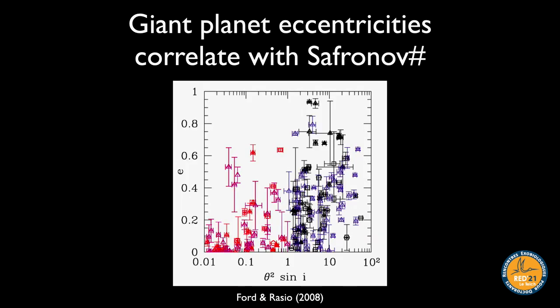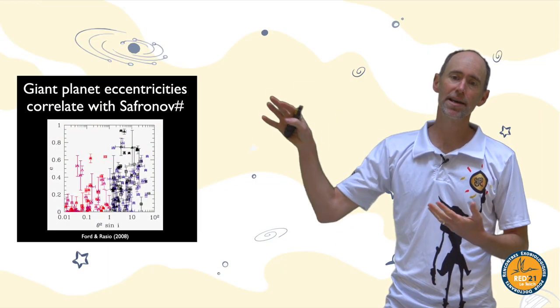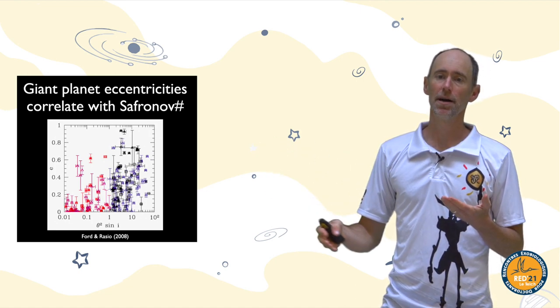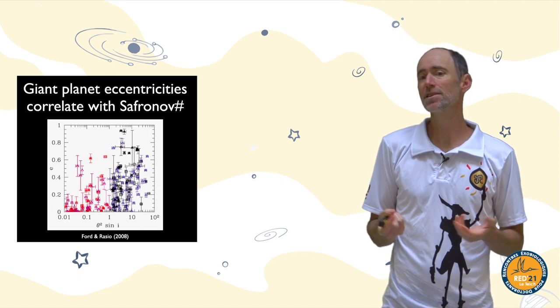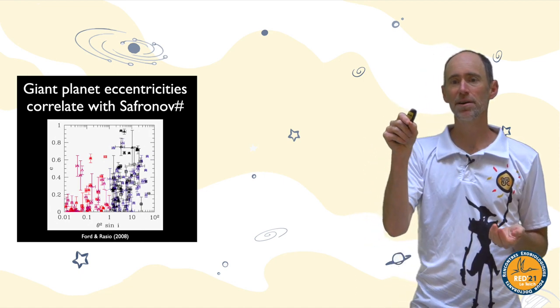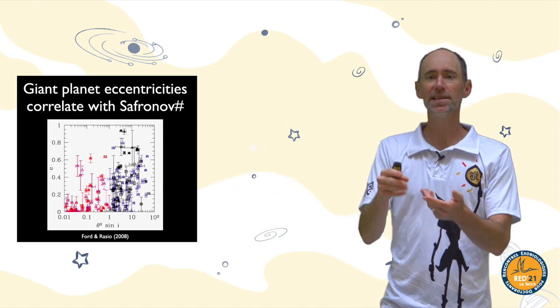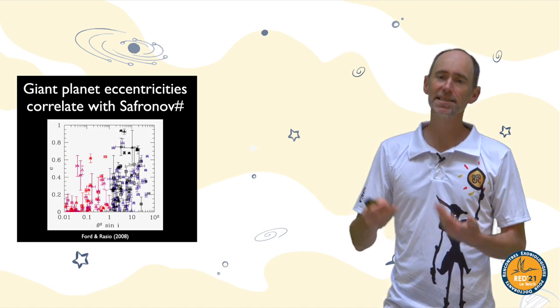Looking at known giant planets, the x-axis shows the Safronov number and the y-axis shows observed orbital eccentricity. For Safronov numbers above one, eccentricities are much larger; for Safronov numbers below one, they're much lower on average. This confirms that scattering dominates for high Safronov number planets. It's not a perfect correlation because what really matters is the Safronov number when the action was happening, not afterwards.